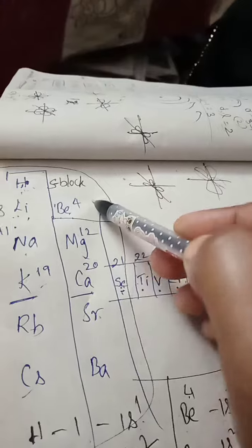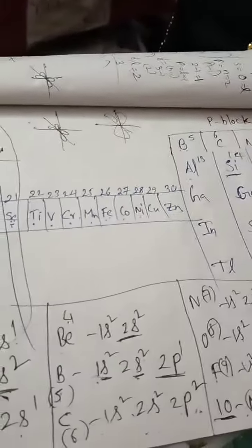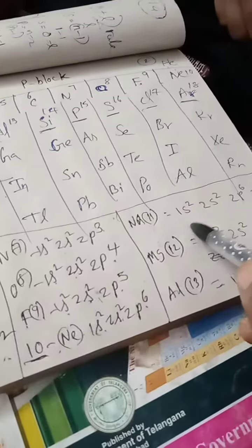Sodium: 1s² 2s² 2p⁶, all filled, then we go to 3s¹.